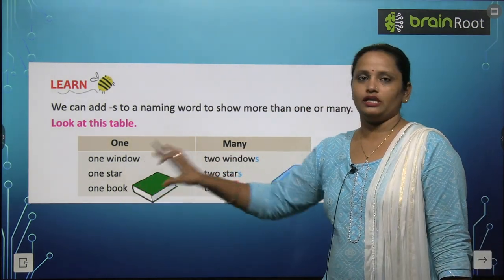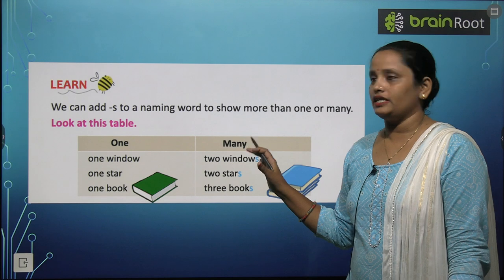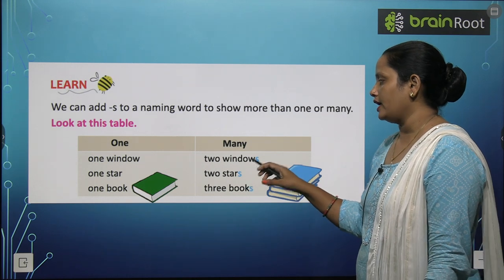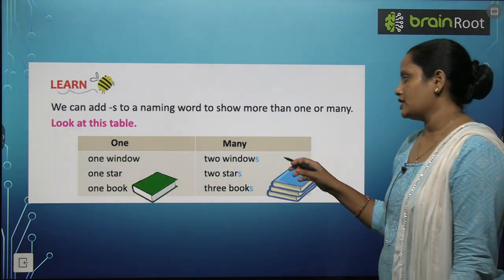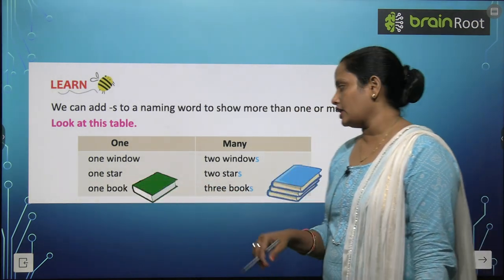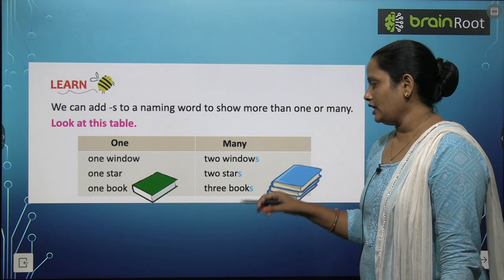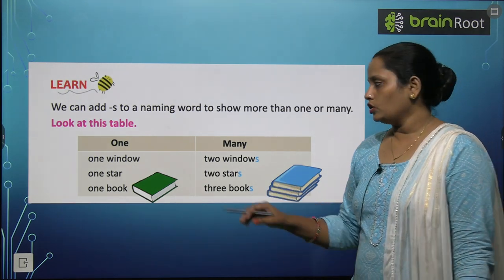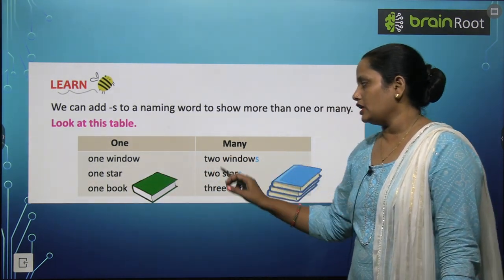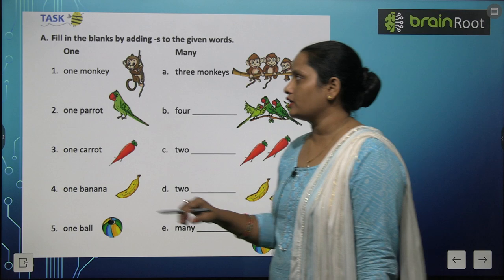Now look at this table. Here you can see: one and many. Toh one window hai toh W-I-N-D-O-W, window. Jab do hain toh W-I-N-D-O-W-S — S laga ke windows kar diya. Similarly, one star becomes two stars. One book ban gayi three books. Toh jitne bhi naming words hain unke saath S lagaya hai — one ka two ya teen kar diya.